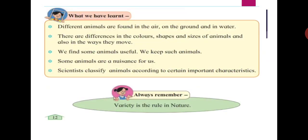So what have we learned today, students? Different animals are found in the air, on the ground, and in water. There are differences in the colors, shapes, and sizes of animals, and also in the ways they move. We find some animals useful and we keep such animals. Some animals are a nuisance to us. Scientists classify animals according to certain important characteristics. It is very interesting to learn about all such animals — do try to find out more about them when you are older.